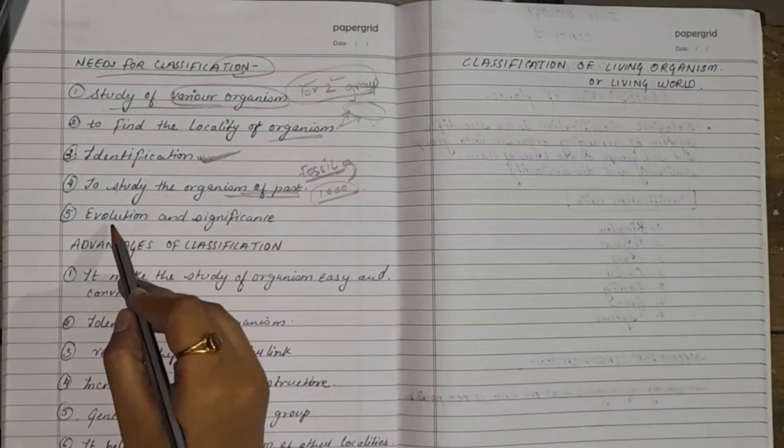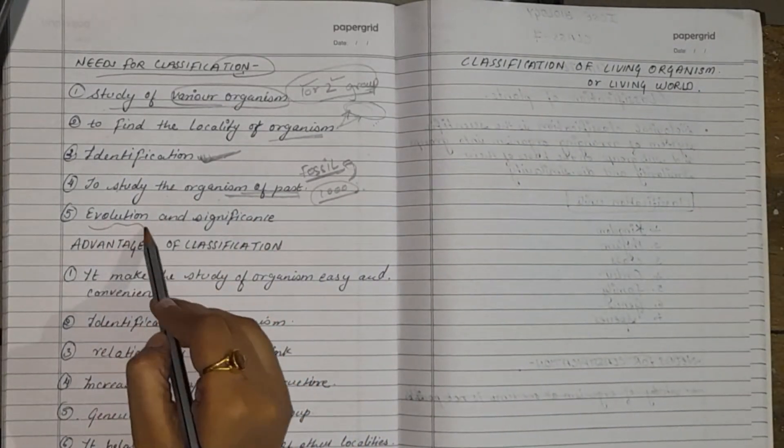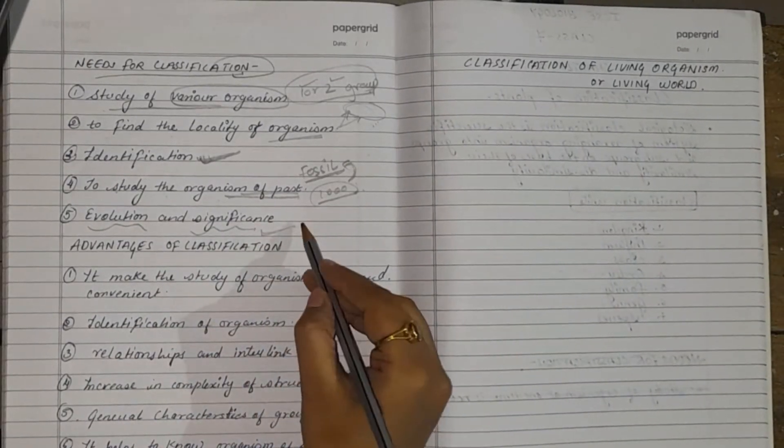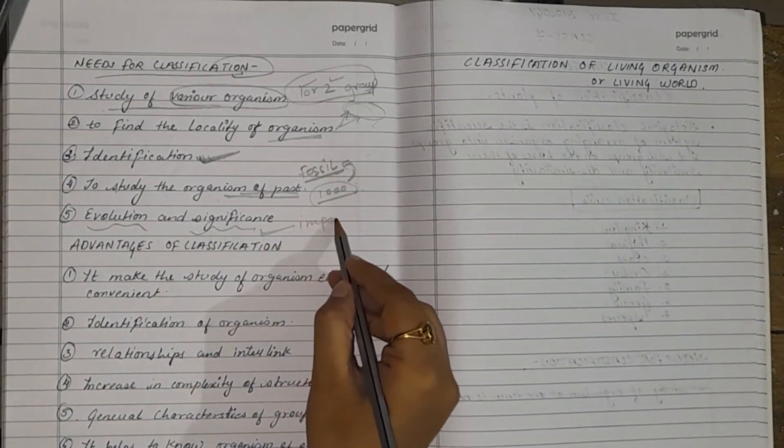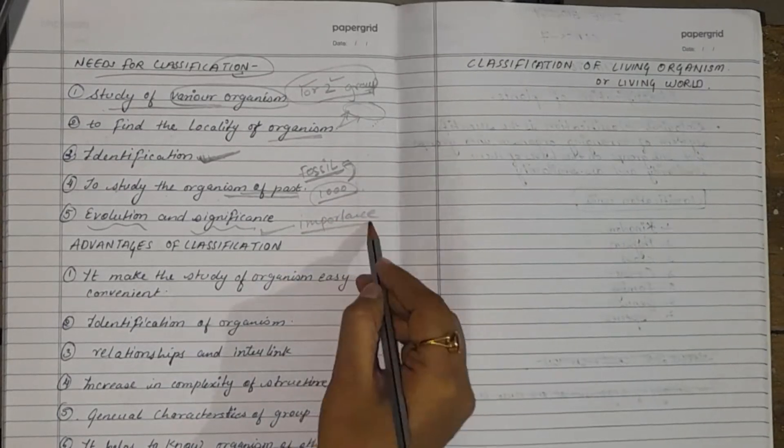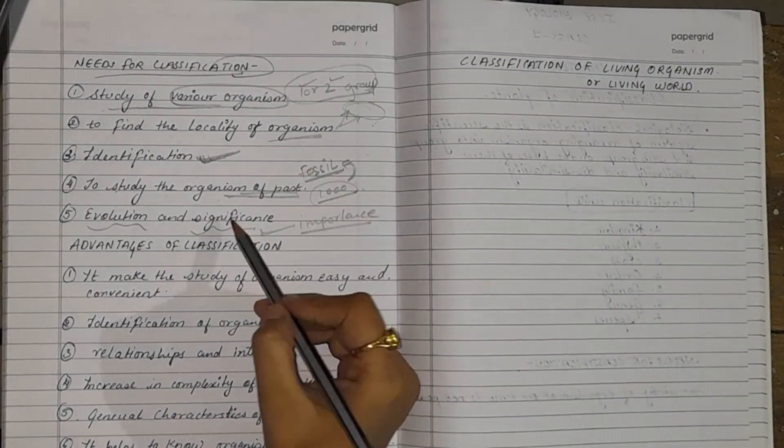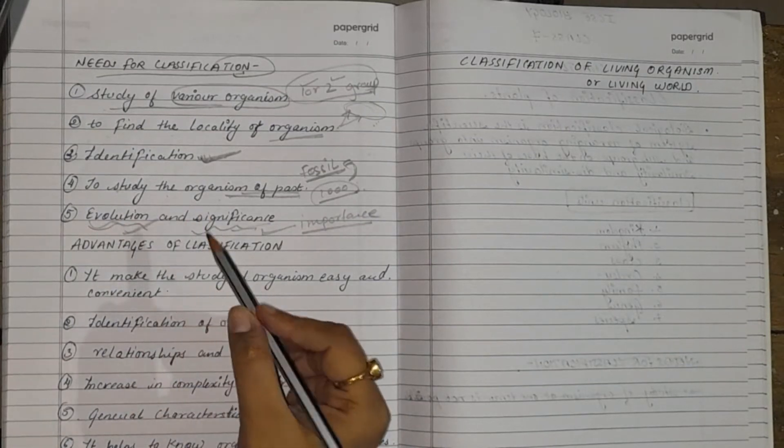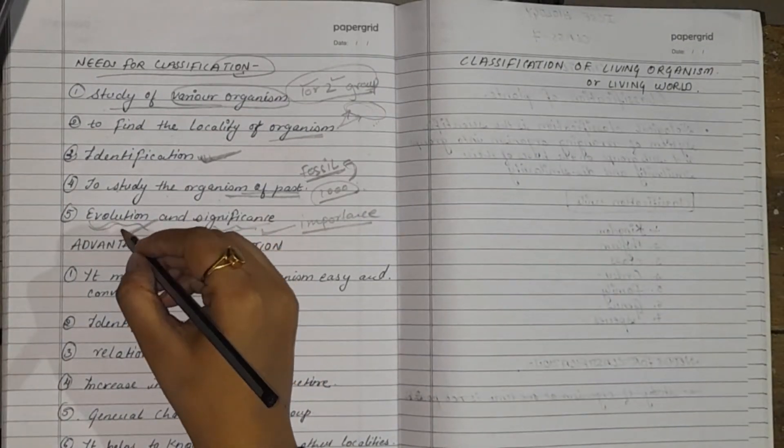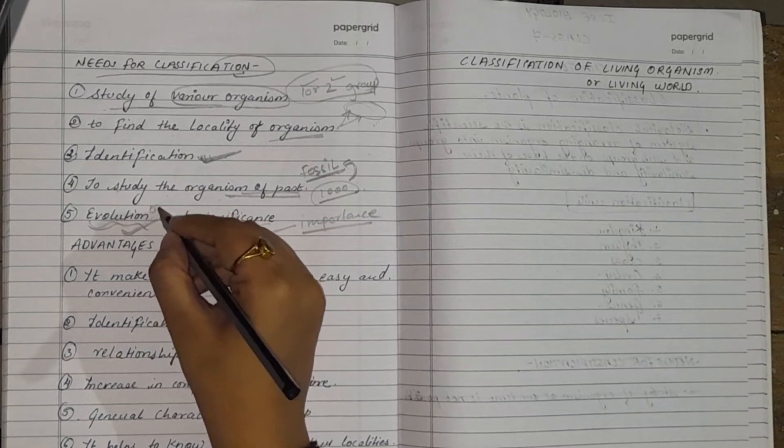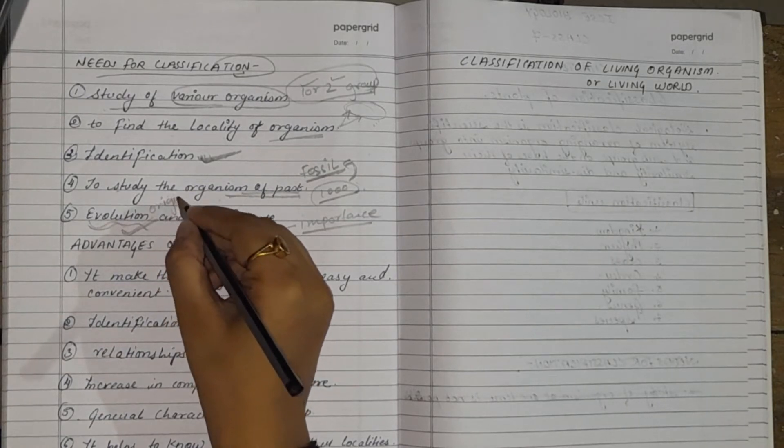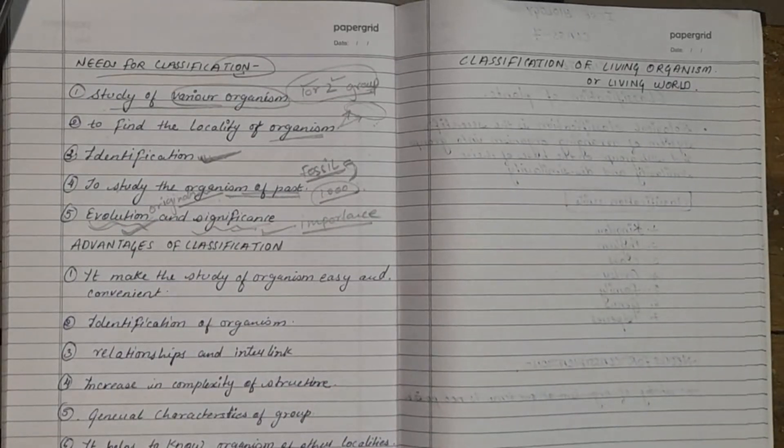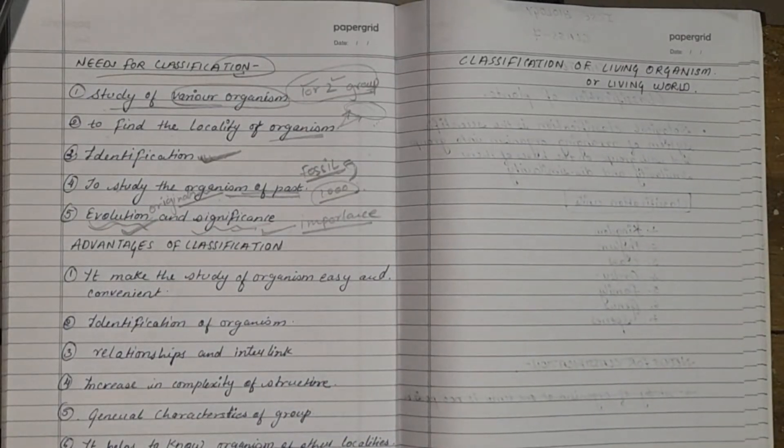Next need for the classification is evaluation and significance. Significance is the importance. To know the importance of the organism or the group, classification is needed. Evolution and origin. So where does this organism is originated? For finding the origin of the organism, we need classification.